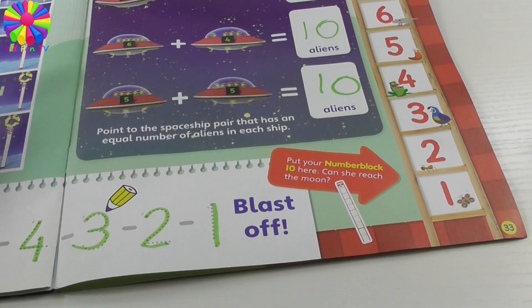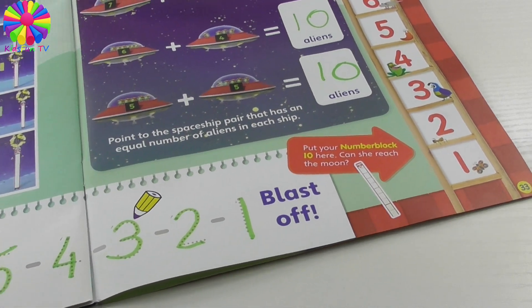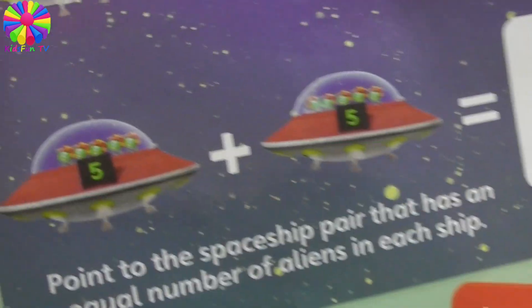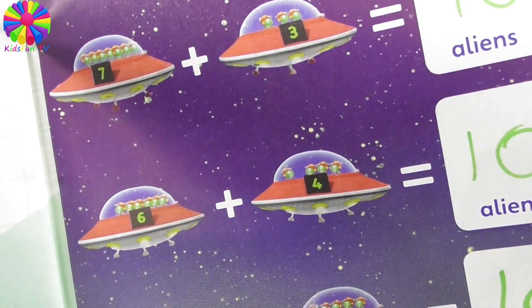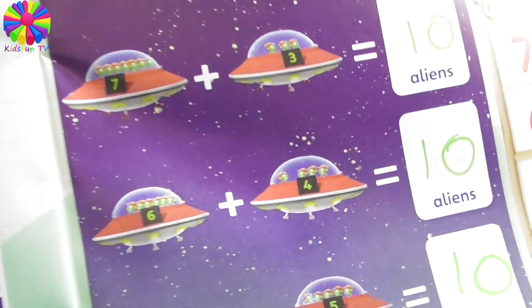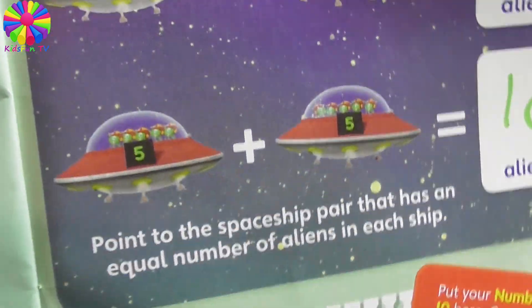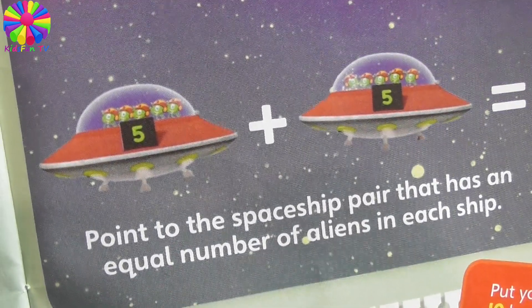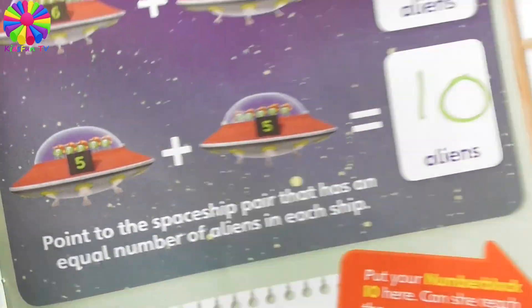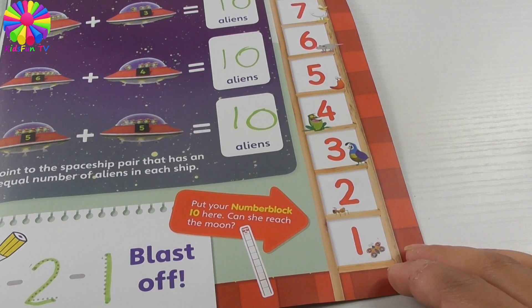Point to the spaceship that has an equal number of aliens in each ship. This one doesn't have equal aliens, and this one doesn't either. Which one could it be? I think it's five plus five — yes, that's the right one!